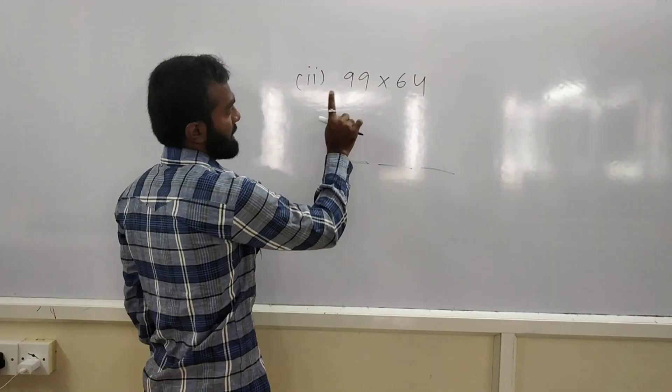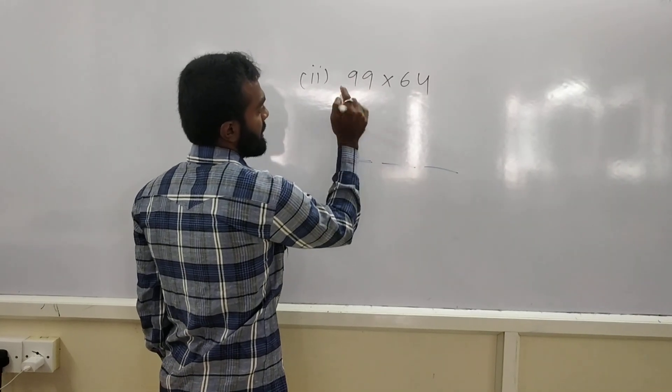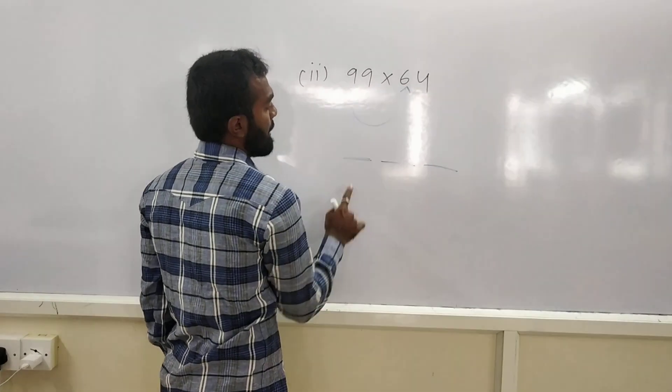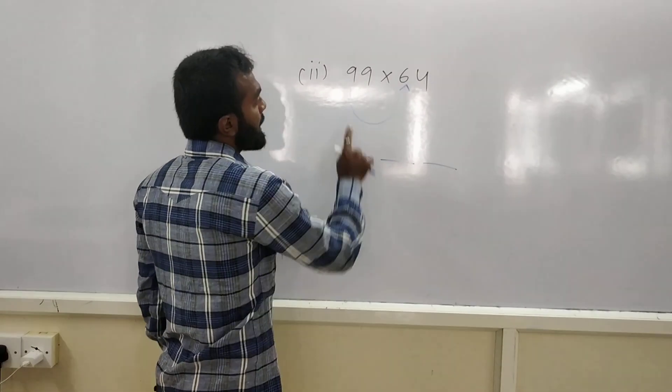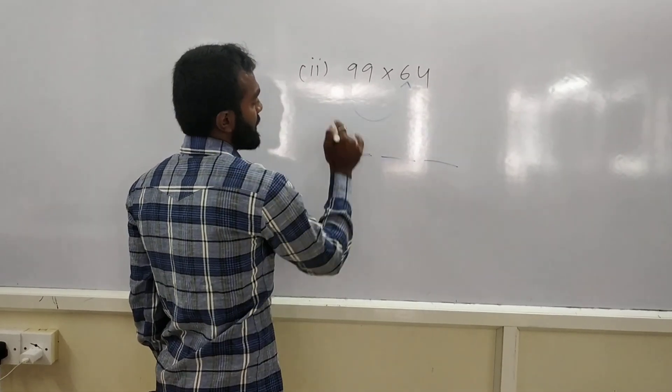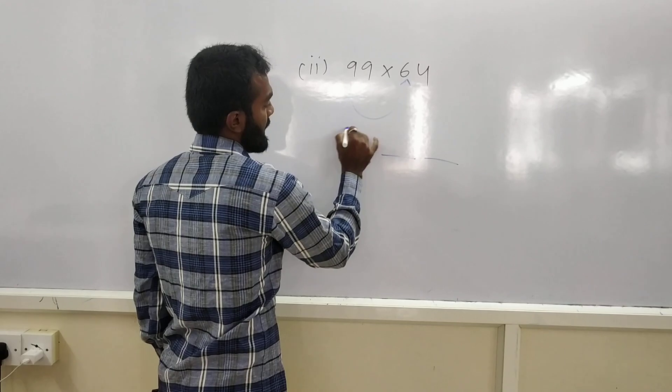And, multiply the 1st digit of 1st number with 1st digit of 2nd number. And, place in the 1st place. 9, 6 are 54. And, you write 5 and 4.